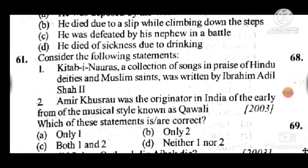Question 61: Consider statements — Kitab-i-Nauras, a collection of songs in praise of Hindu deities and Muslim saints, was written by Ibrahim Adil Shah; and Amir Khusrau was the originator in India of the early form of the musical style known as Qawwali. Answer is C — both first and second statements are correct.